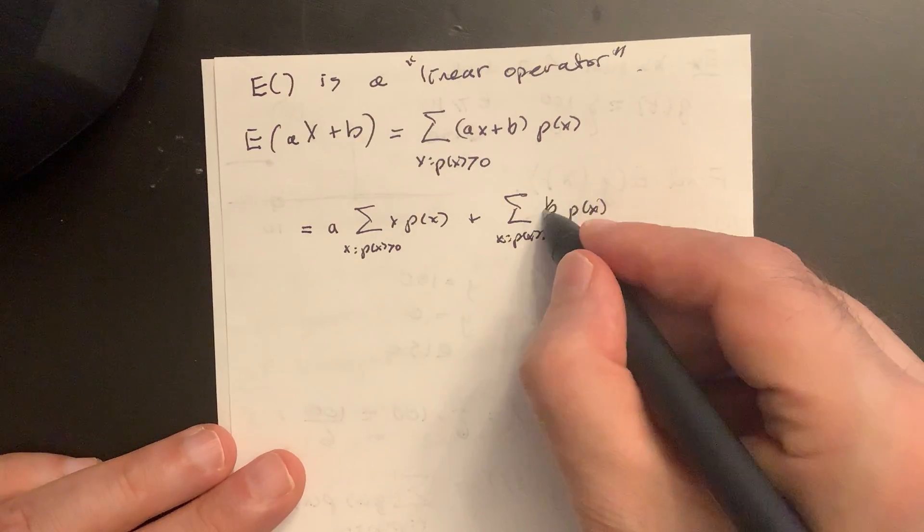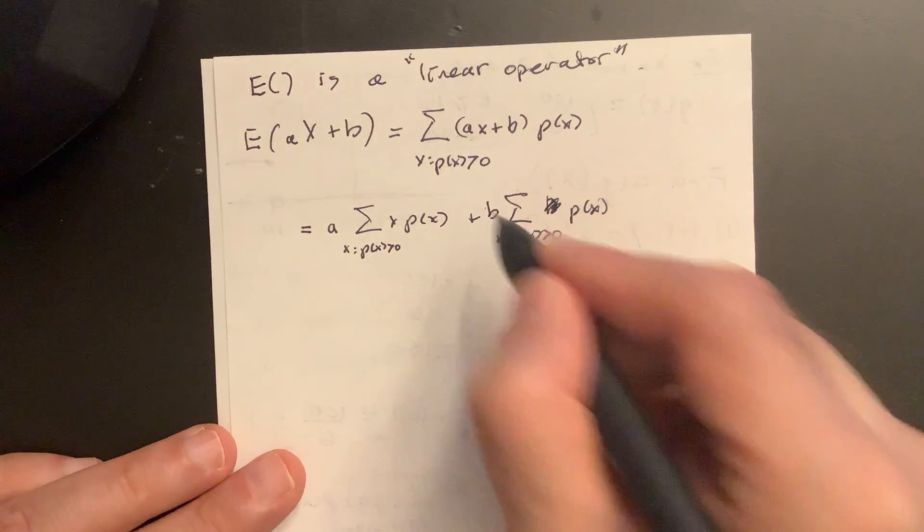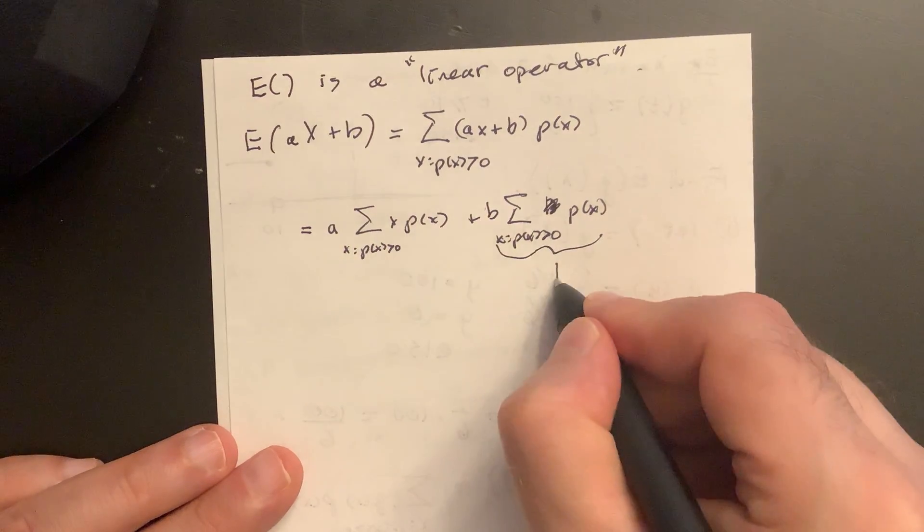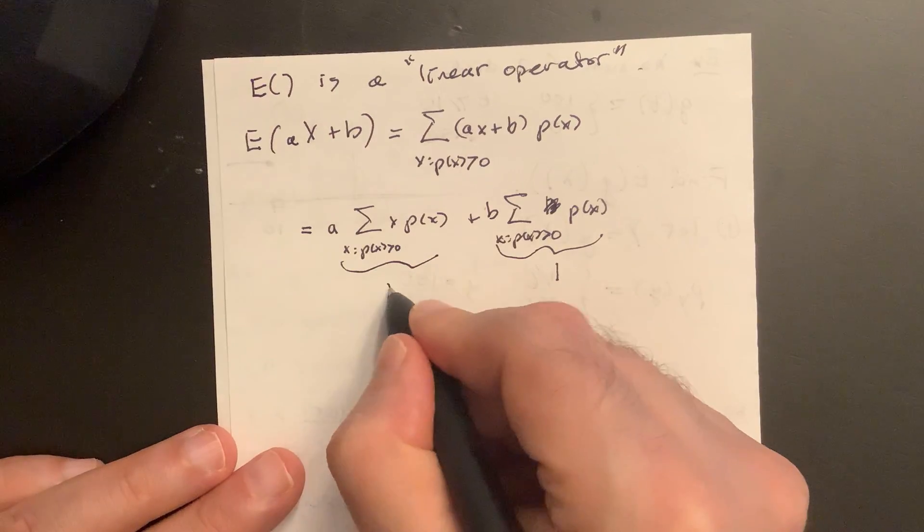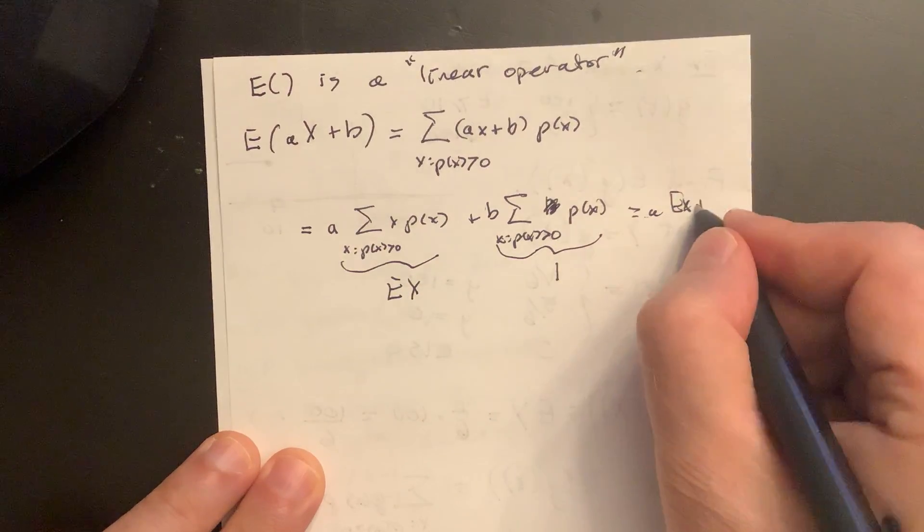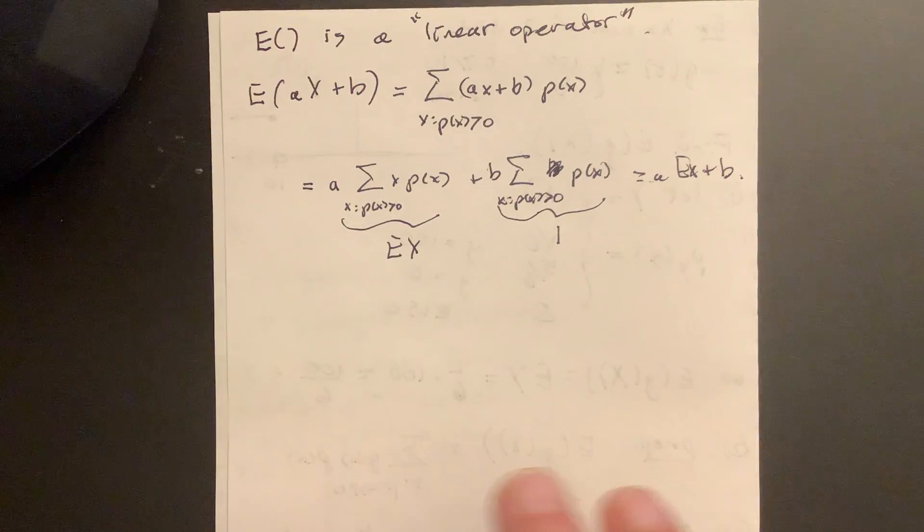All right, just a constant. I should have taken that out, right? p(x). Yeah, we can take this out even. Okay, well, this is one. This is E(x). So that's my result, right? A*E(x) + b. Yep.